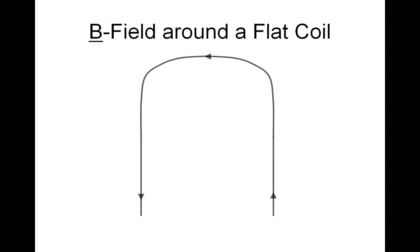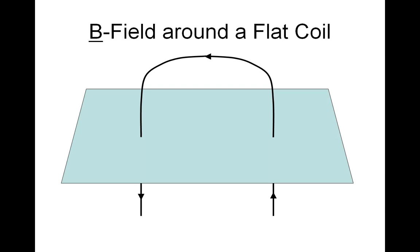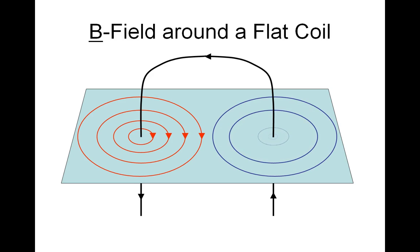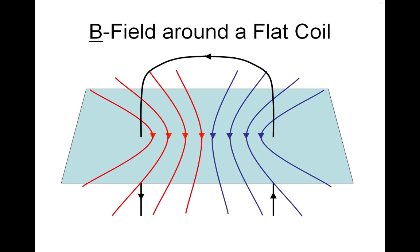Now, if we look at current flowing upwards on the right hand side, downwards on the left hand side, we get our circular field pattern on the left hand side. Using the thumb rule, that's a clockwise field. On the right hand side, the field pattern is now anti-clockwise. But down the centre, in the middle of the coil, the pattern combines and we get this field.